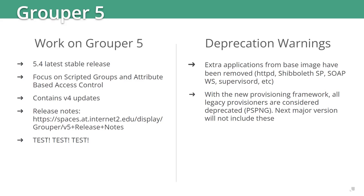Since Grouper 5 is the feature enhancement branch, it's a good idea to test very thoroughly when upgrading — it's more likely to see bugs introduced with newer features. There are deprecation warnings, and extra applications have been removed from the base distribution, including Apache, the Shibboleth SP, and SOAP web services. The old provisioner framework has been deprecated and is still in the release, but will go away in future releases.